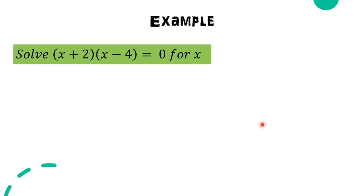So, as an example to help us understand the zero product property, solve for x: the expression (x + 2)(x - 4) is equal to zero.